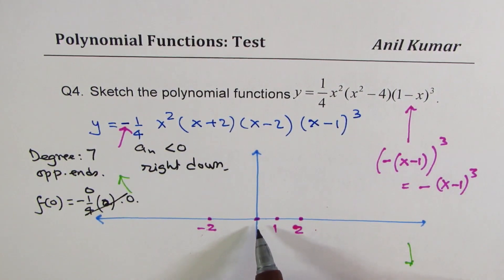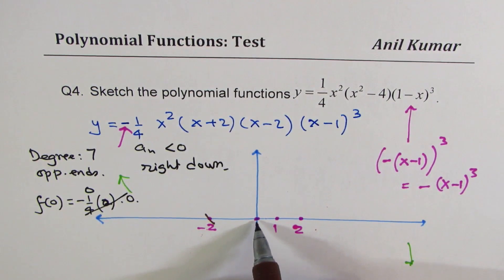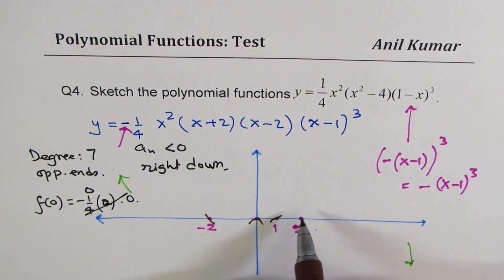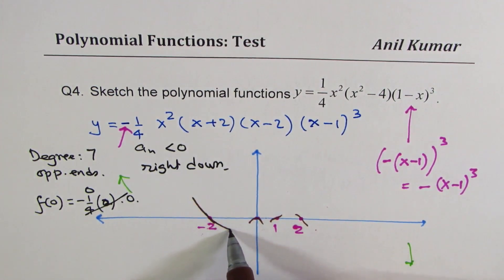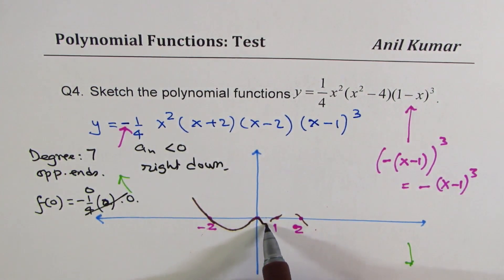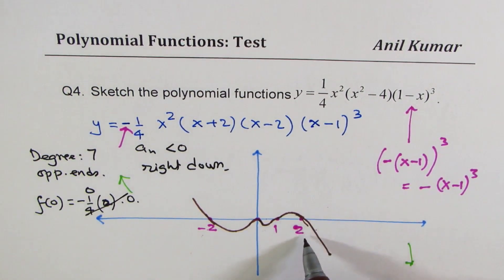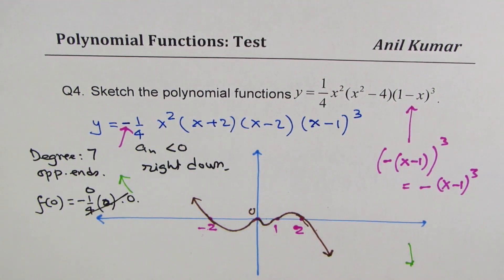At zero the order is 2, so the graph turns there. Moving from the left, minus 2 is linear so the graph crosses straight through. At zero it is order 2 so it turns. At 1 it is cubic — the graph goes through with an inflection-like shape and then leads to the final end behavior.